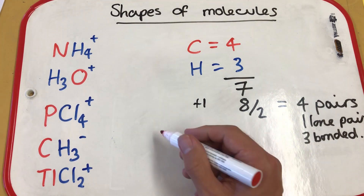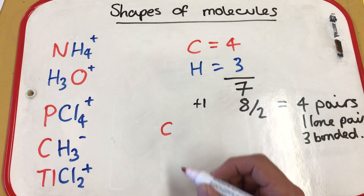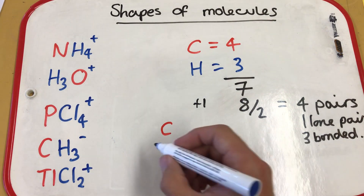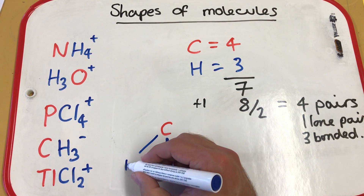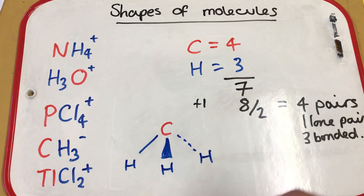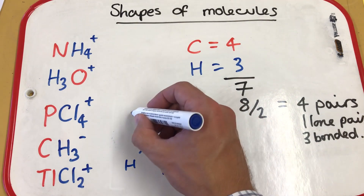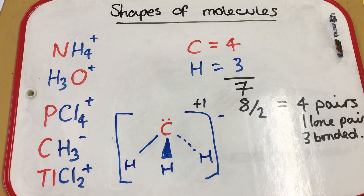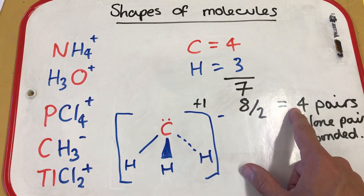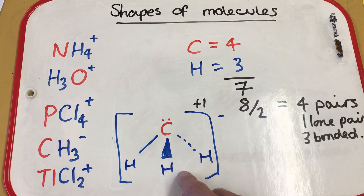With four pairs of electrons, three are involved in bonding, leaving one lone pair and three bonded pairs. This gives us a trigonal pyramidal structure — central carbon with one hydrogen on the flat plane of the board, one coming towards you, and one going away, with the lone pair at the top. The bond angles are 109.5 minus 2.5 degrees, leaving 107 degree bond angles — trigonal pyramidal.